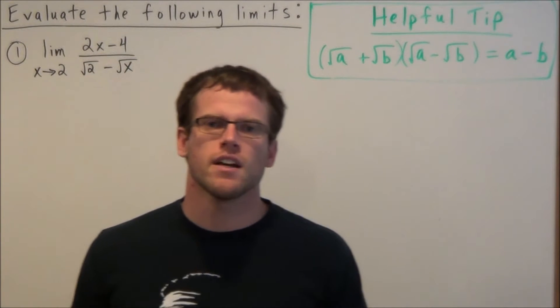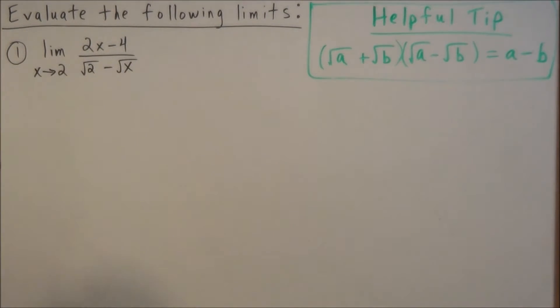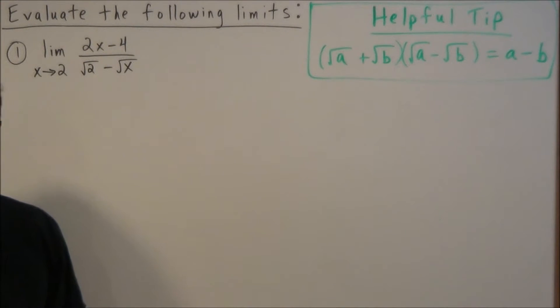Hi, my name is Vincent, and today I want to take a look at evaluating limits involving radicals. So we have evaluate the following limits, and we're going to do two examples, but the first one is the limit as x approaches 2, 2x minus 4 over radical 2 minus radical x.